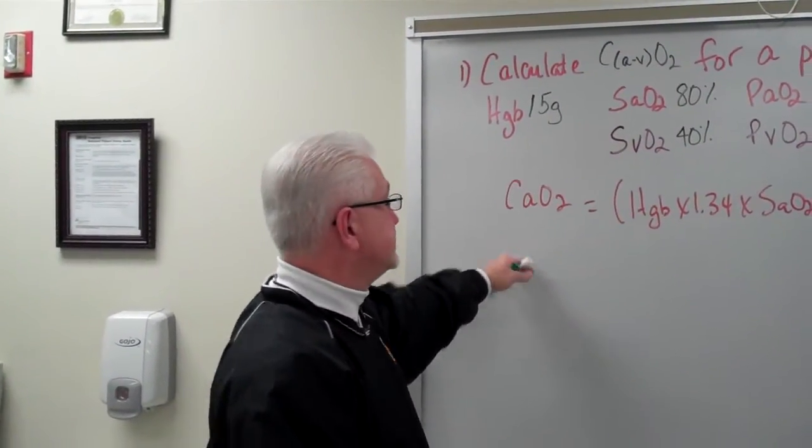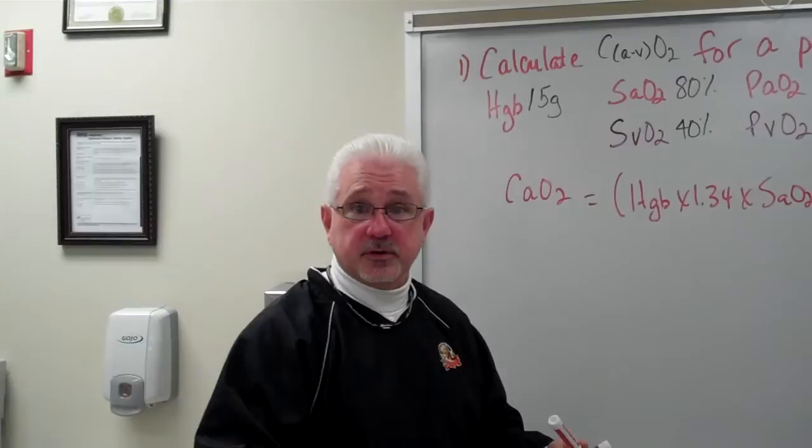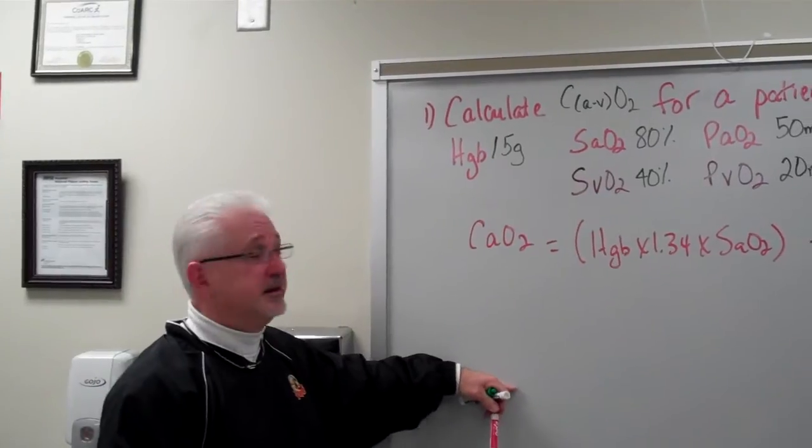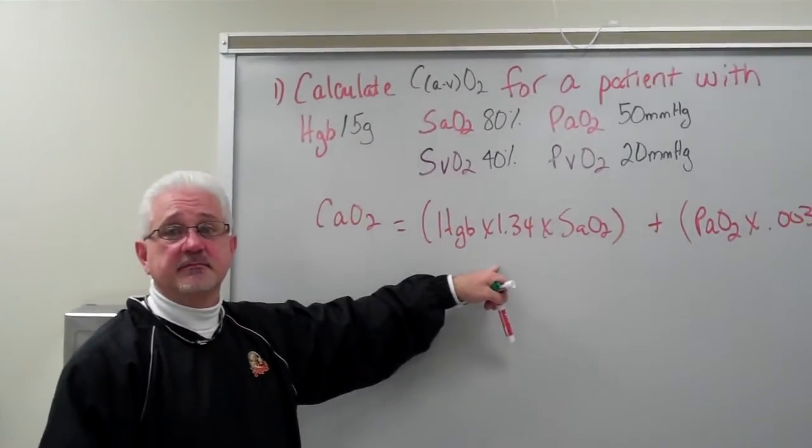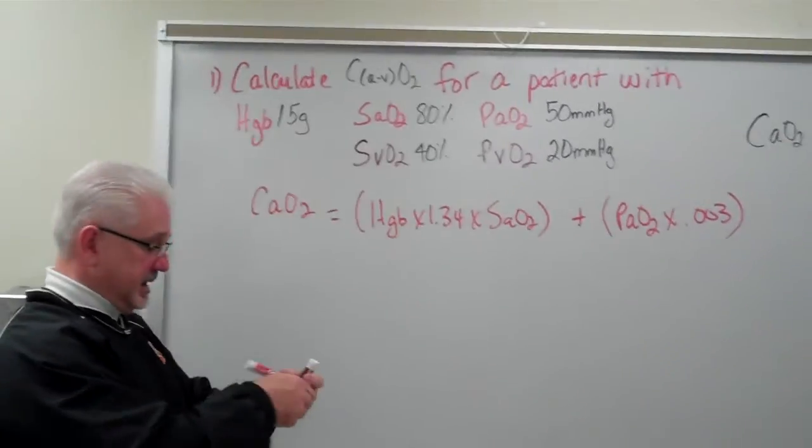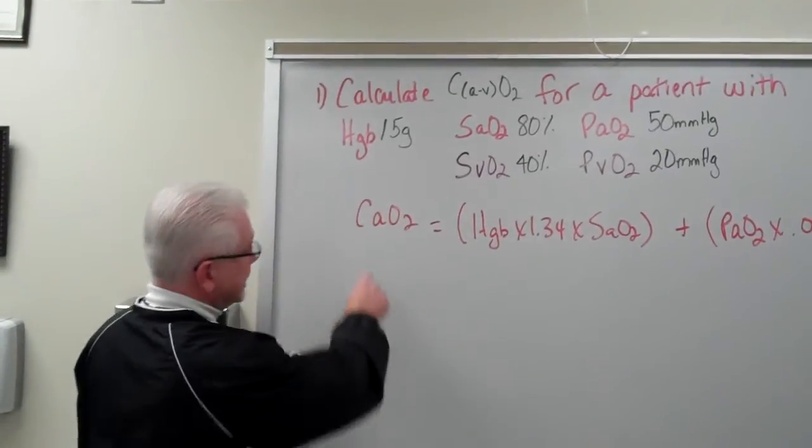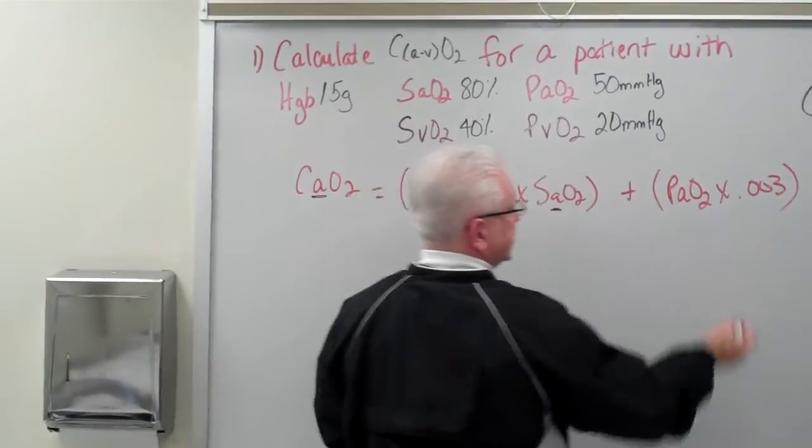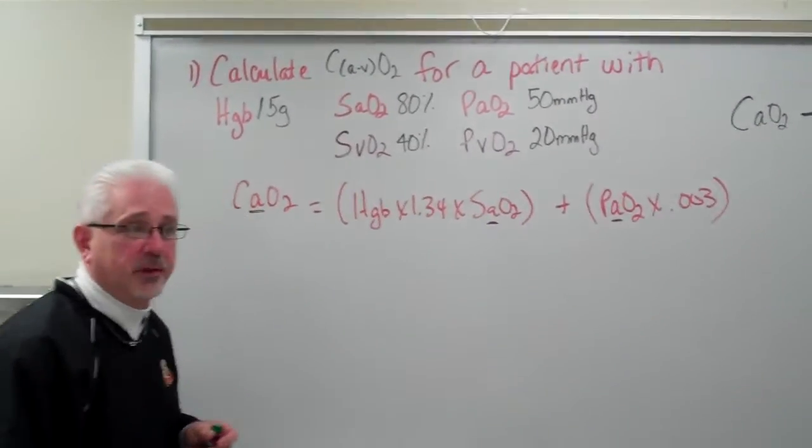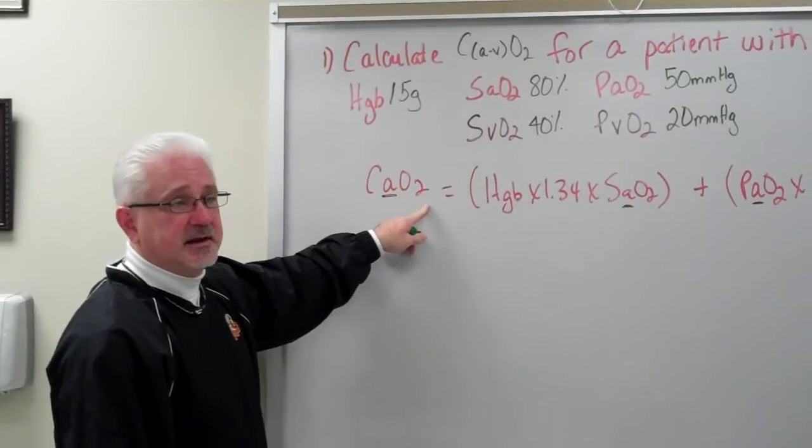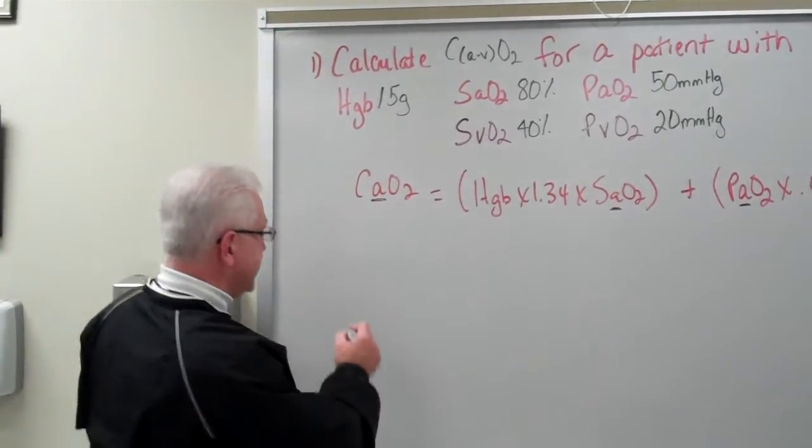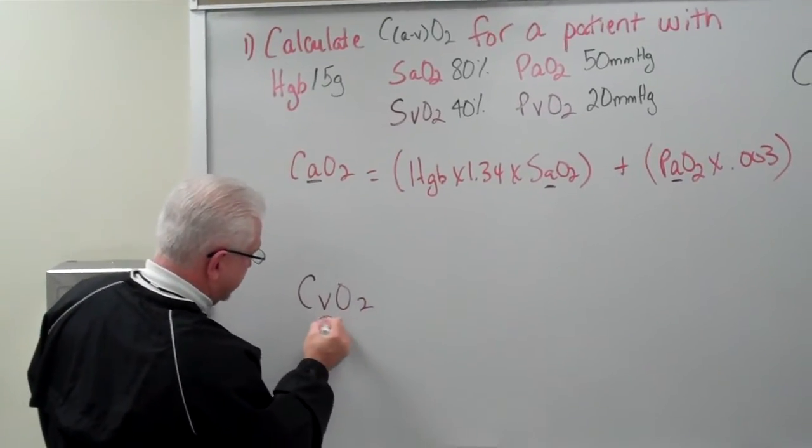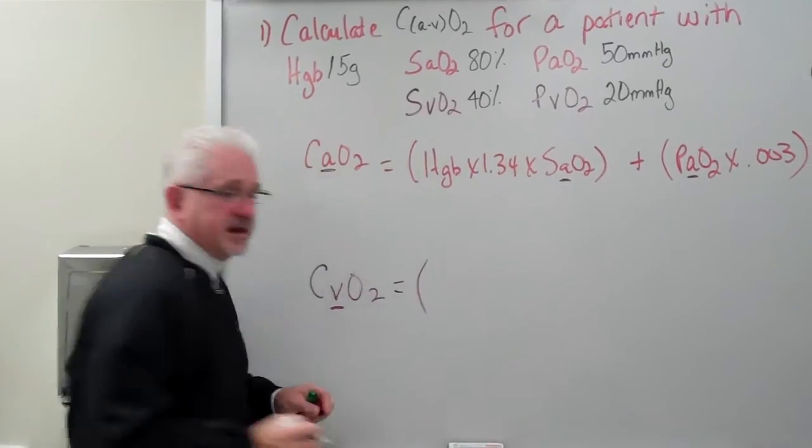Now what I need to do is to plug in my numbers. But what I haven't given you so far is my CvO2 formula. Well, if you know your CaO2 formula, you know your CvO2 formula. Here's why I know you know it. We know that this is the arterial blood, this is the arterial saturation, and this is the partial pressure of oxygen in the arterial blood. And now I want to calculate the CvO2. But now I want it for the venous. It's almost identically the same formula.